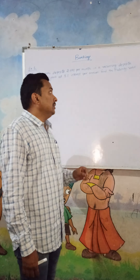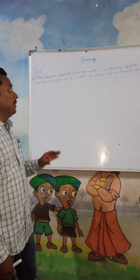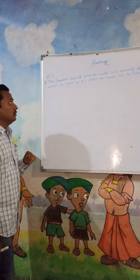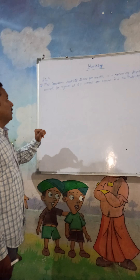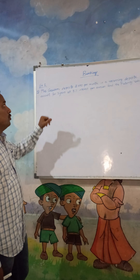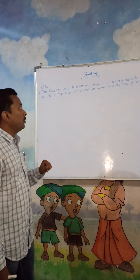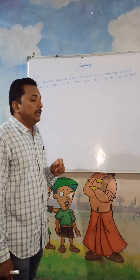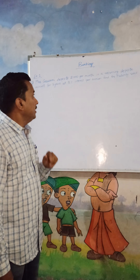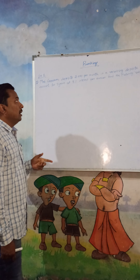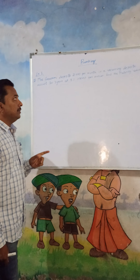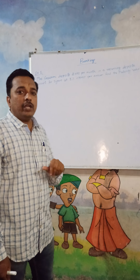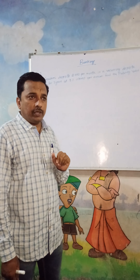Students, see the problem based on recurring deposit account. The problem is: Mrs. Goswami deposits rupees 1000 per month in a recurring deposit account for 3 years at 8% per annum. Find the maturity value.